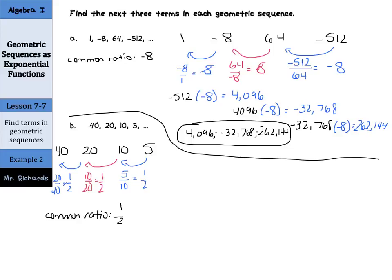Now we can take that last term, which was 5, and multiply it by 1/2. You could write these in decimals, or keep this as a fraction. I'm going to keep it as a fraction. 5 times 1/2 is 5/2. If I take 5/2 and multiply by 1/2, I get 5/4. If I take 5/4 and multiply by 1/2, I get 5/8. So my answer is 5/2, 5/4, and 5/8.